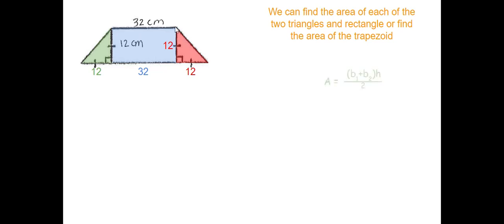The formula for a trapezoid is: base 1 plus base 2, times the height, divided by 2. The height was given to me — that's 12. One base is 32. But to find the other base, we said that the tick marks are the same, so this is 12 and this is 12. That means the bottom length is 12 plus 12 plus 32, because from here to here is 32 as well. Add those three together and that gives you the total of your other base, which is 56.